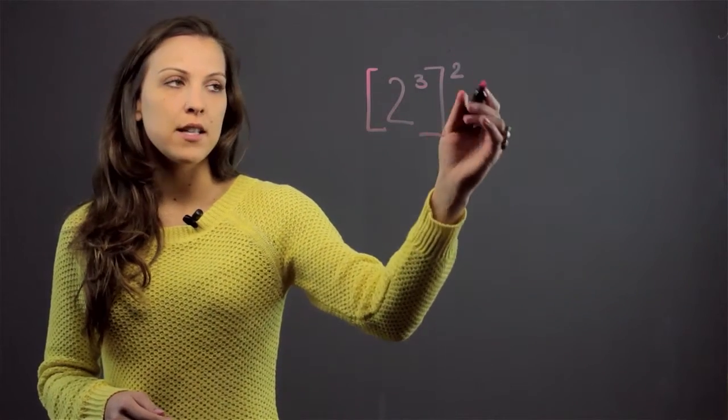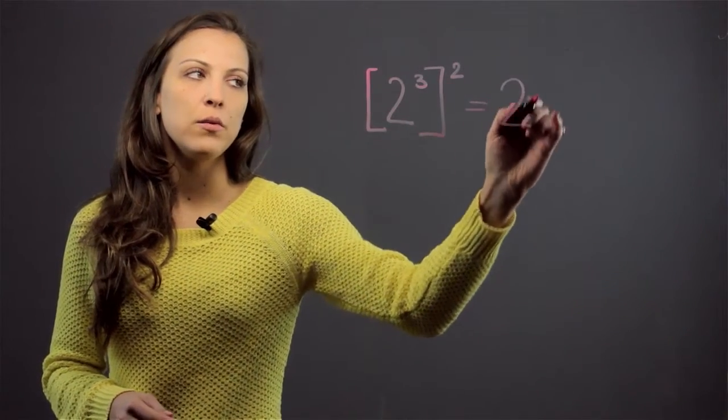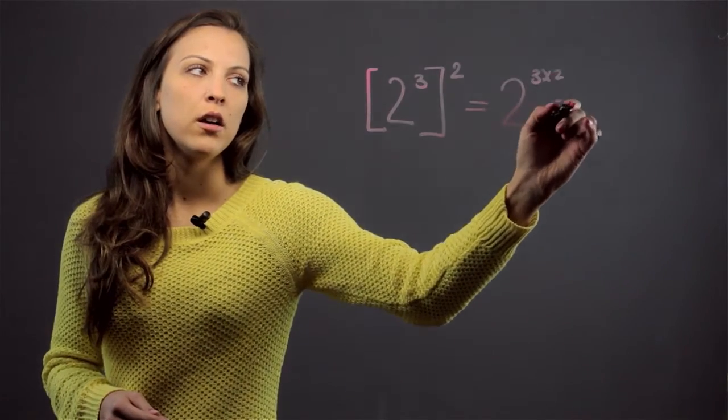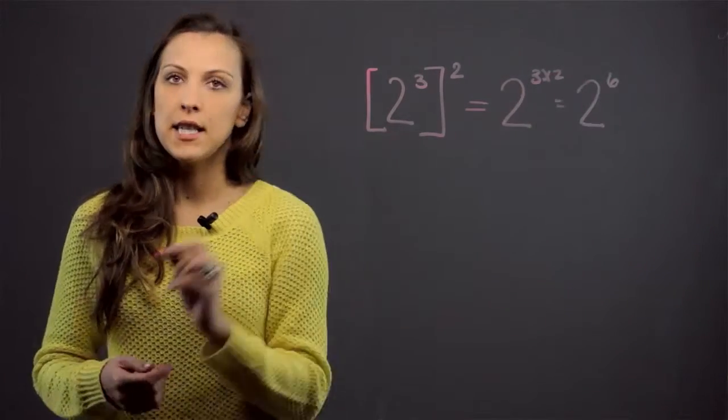So 2 to the 3rd raised to the 2nd would actually be 2 to the 3 times 2, so it would be 2 to the 6th power.